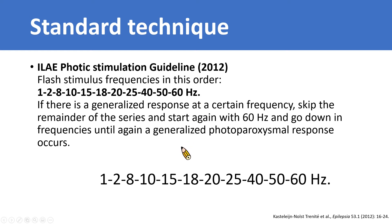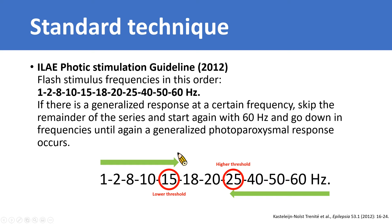Let's see an example. The flash stimulus starts with 1 Hz, 2 Hz, 8 Hz, 10 Hz. Assuming the patient develops a photoparoxysmal response at 15 Hz, placing the lower threshold at 15 Hz. We skip the remainder of the series and start the flash stimulus backwards from 60 Hz — 60 Hz, 50 Hz, 40 Hz, then 25 Hz — which is when our hypothetical patient develops another photoparoxysmal response. We then call that frequency the higher threshold, being 25 Hz in this case. EEG technicians should record the responses in detail.